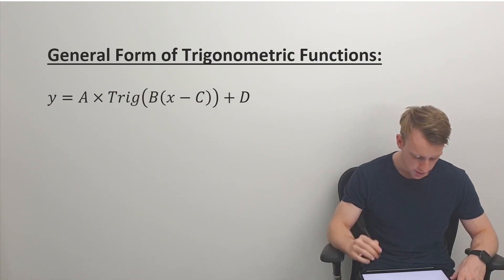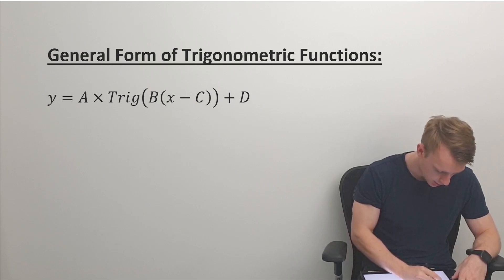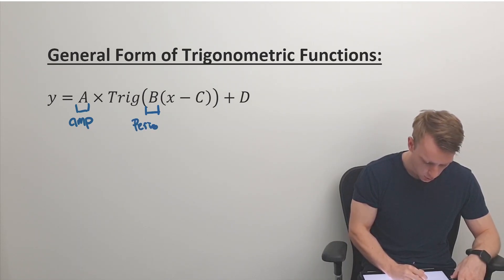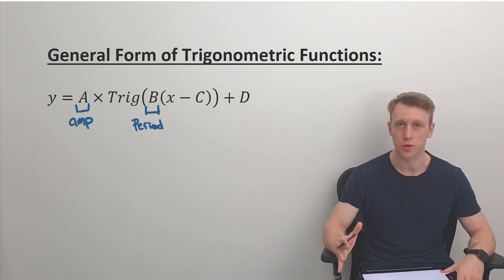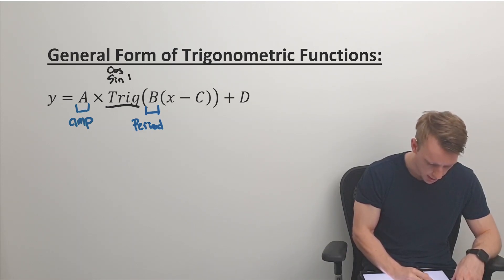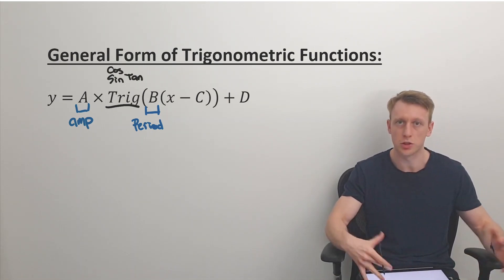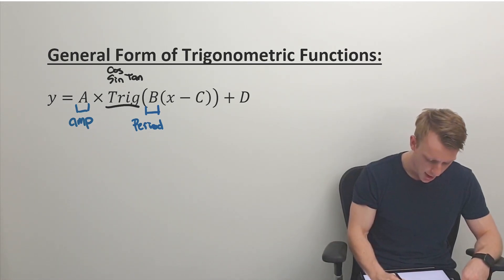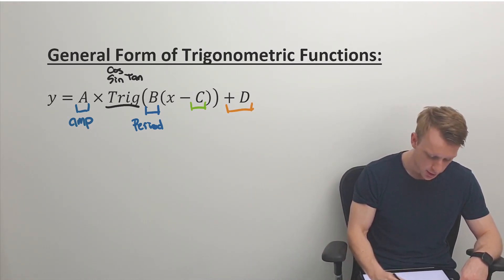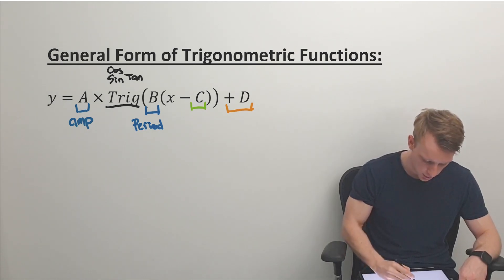Here we have the general form of the trigonometric equation. A is the amplitude; B affects the period — how quickly a trig function completes a cycle. This applies whether the trig function is sine, cos or tan. Minus C and plus D represent horizontal and vertical shifts respectively, just as we've seen with every other function.